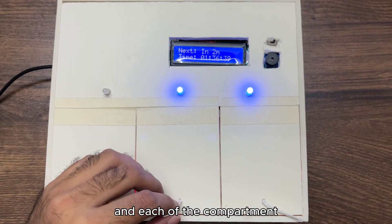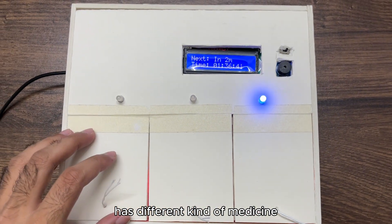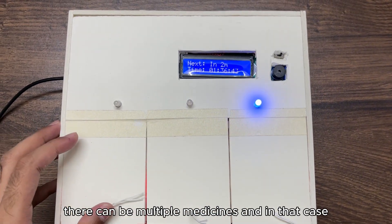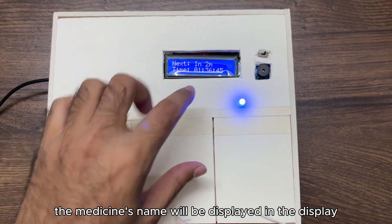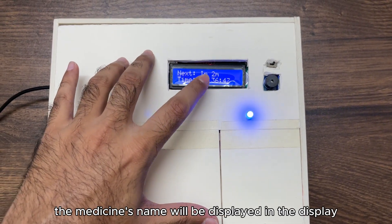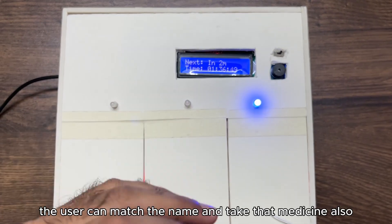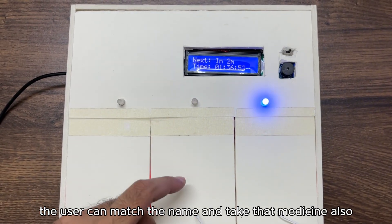There are three compartments and each compartment has different kinds of medicine. There can be multiple medicines, and in that case the medicine's name will be displayed on the display so the user can match the name and take that medicine.